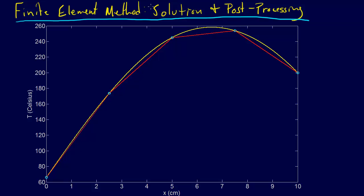Once we have the system of equations — and I think we called this step 5 — you just solve it. We're not going to rehash how to solve a linear system of equations, but you just use one of the methods that we've talked about previously. You'll typically use a software package like MATLAB or something that has it built in.